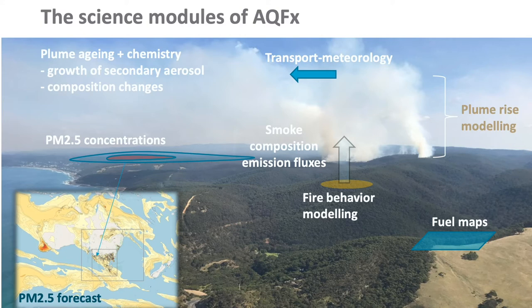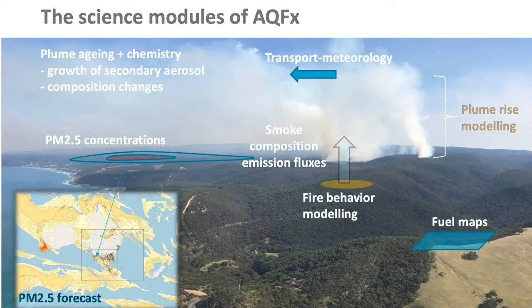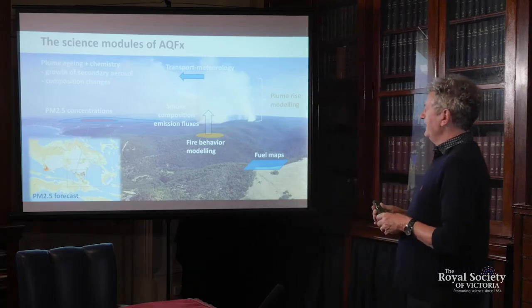The next step is determining where this stuff will blow - will it go into the stratosphere and make its way around the world, or will it be transported from a local fire area to a large population center? That's largely done with the Bureau of Meteorology forecasting model, because the weather tells you where the winds are. Another important part: when the smoke comes out it chemically reacts in the atmosphere, and over the course of 24-48 hours you can actually double the amount of mass of particles in the smoke plume. As the plume gets older, smoke can increase in particle size and mass and potentially become more harmful over time.